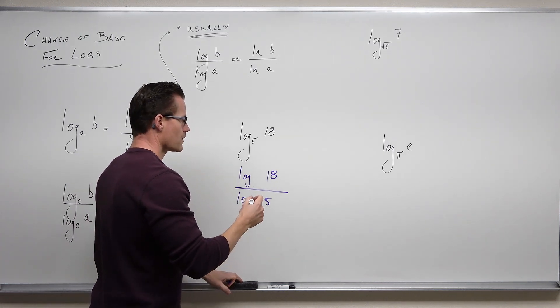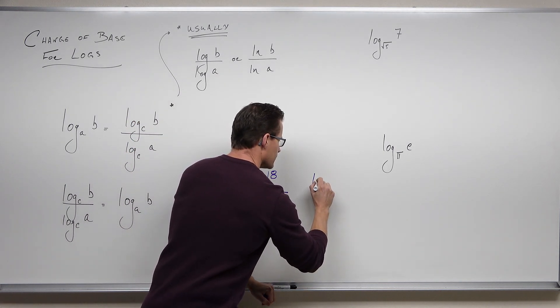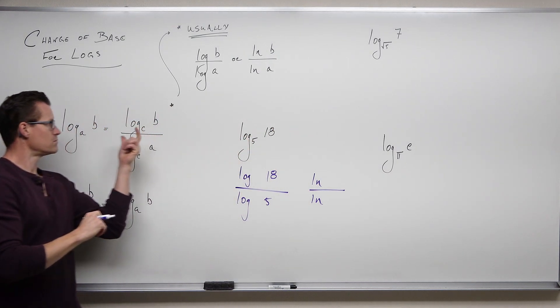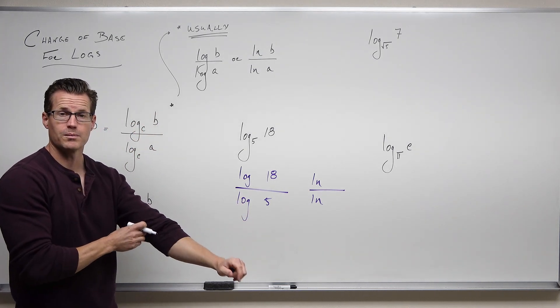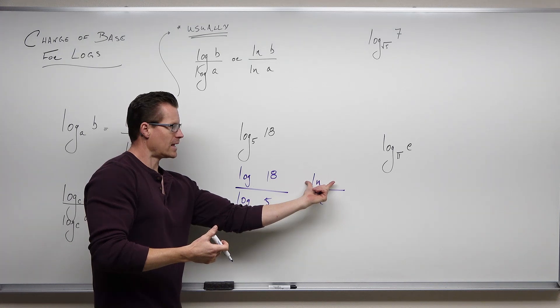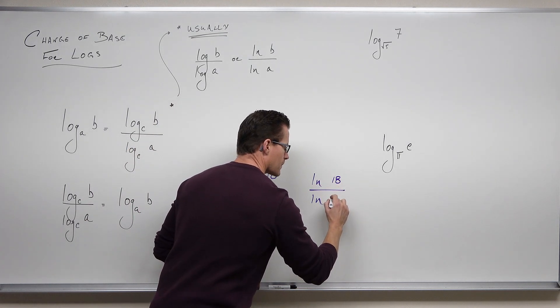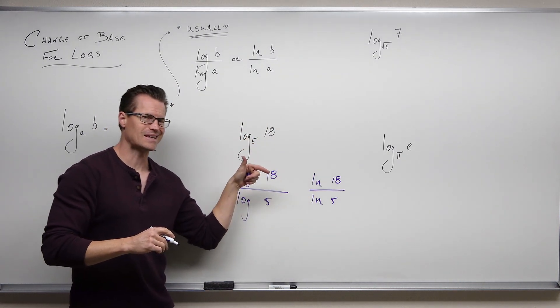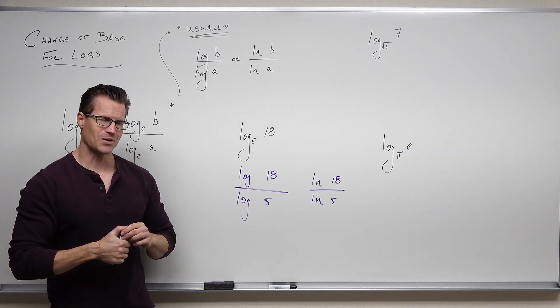The other way, and you should try both - what if you picked log base E? I can change this into any logarithm with whatever base I want, provided I make a ratio of logs with the same base. So, LN, that's log base E. LN, that's log base E. Make sure your 18 goes here and your 5 goes here. Argument on the numerator, base in the denominator.